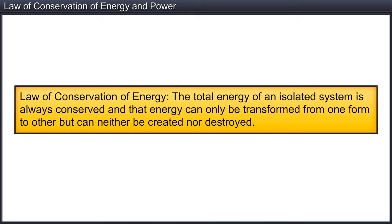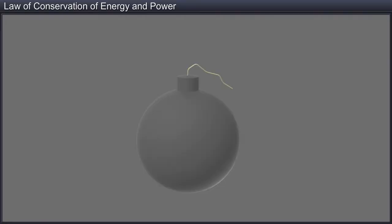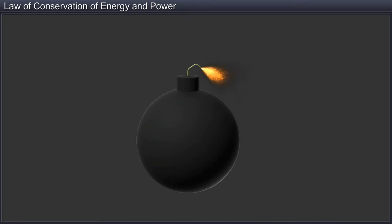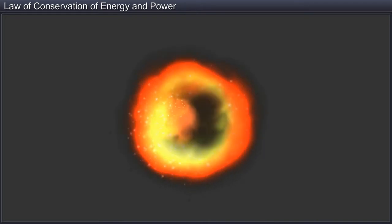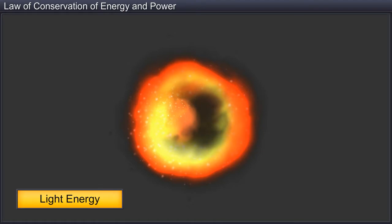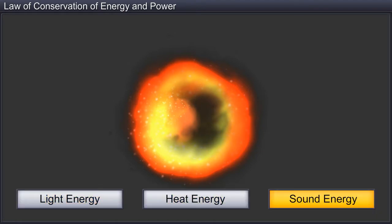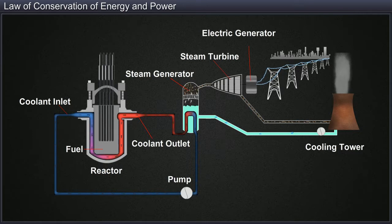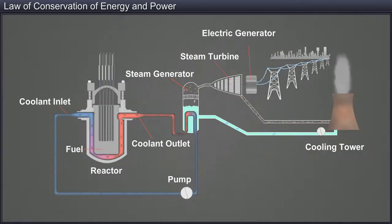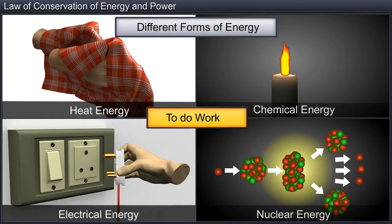The law of conservation of energy states that the total energy of an isolated system is always conserved and that energy can only be transformed from one form to another but can neither be created nor destroyed. For example, when a firecracker explodes, the chemical energy stored in it is converted into light, heat, and sound energy. Nuclear energy is used to produce electrical energy in a nuclear reactor. Different forms of energy are used to do work.